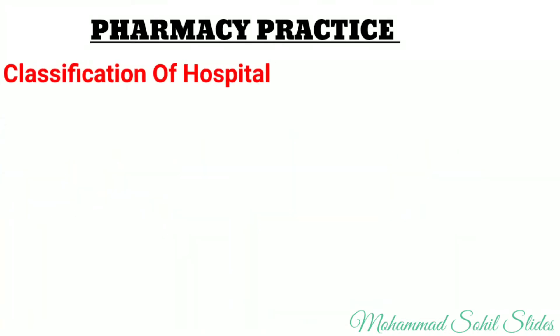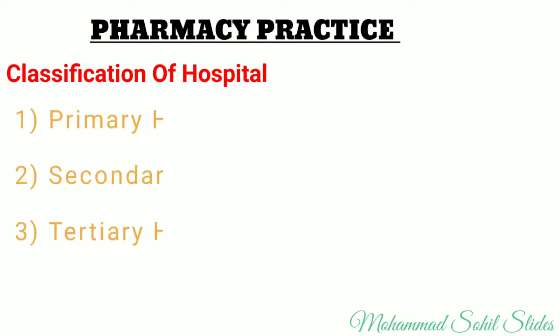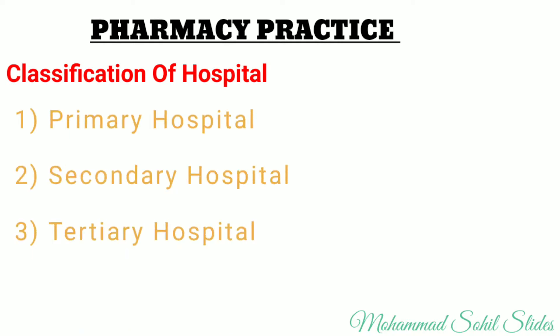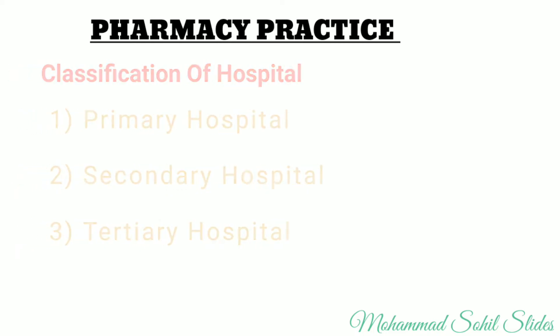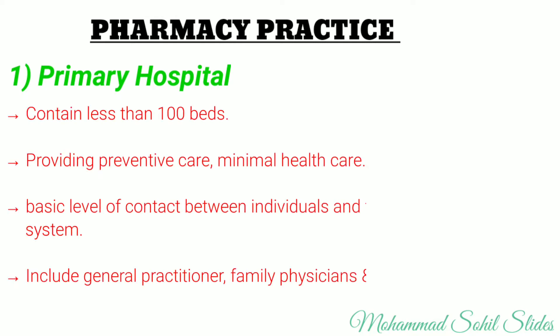Hospitals can be classified into three classes: primary hospital, secondary hospital, and tertiary hospital. A primary hospital typically contains less than 100 beds. They are tasked with providing preventive care, minimal health care, and rehabilitation services. They are a basic level of contact between individuals and families with the health system. They include general practitioners, family physicians, and physiotherapists. Basic services provided include immunization, maternal and child health services, curative care, and prevention of diseases. Staff in primary health centers include a medical officer, a staff nurse, and paramedical support staff.